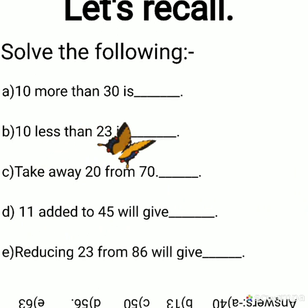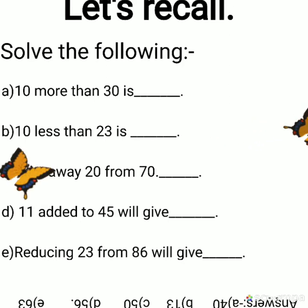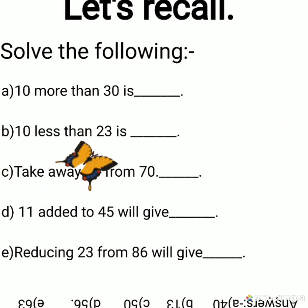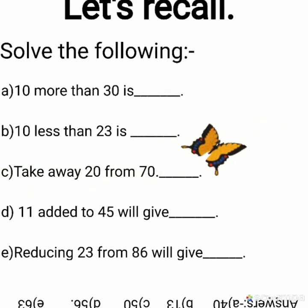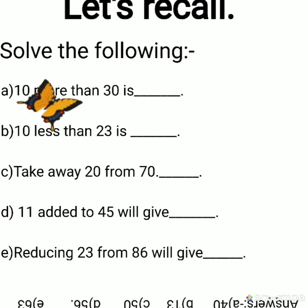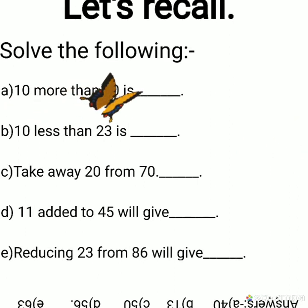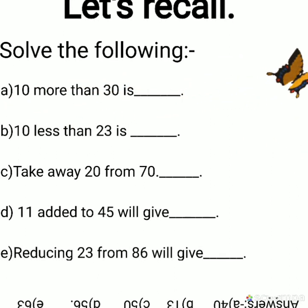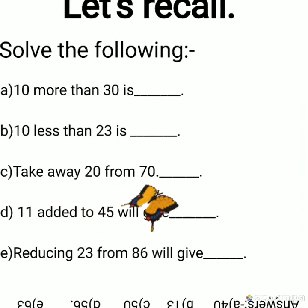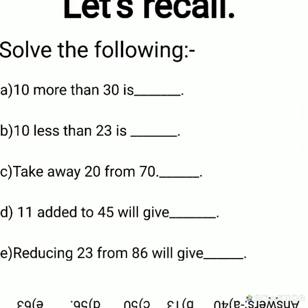D: 11 added to 45 will give dash — 45 plus 11. What will you get? Use the shortcut method here. First add 45 plus 10, because it is easy to add 10, 20, 30. Then add one more.